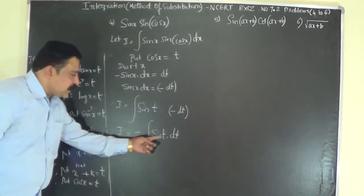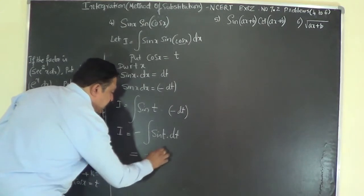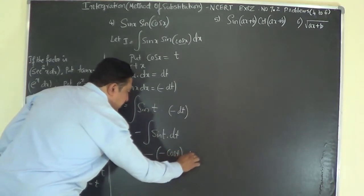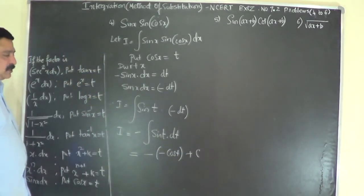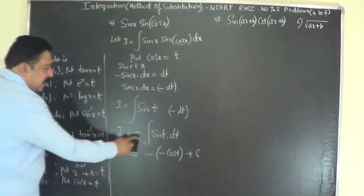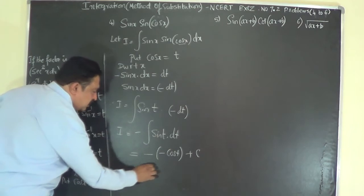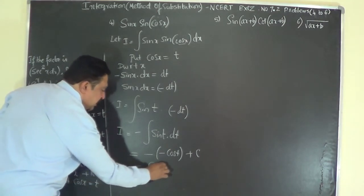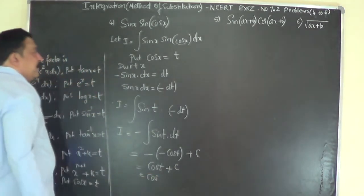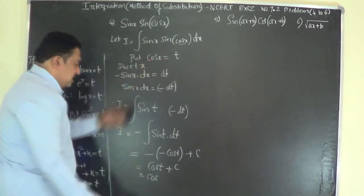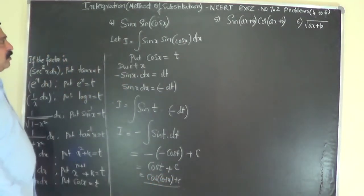The integration of sin(t) dt is minus cos(t), so we get minus of minus cos(t) plus C. The two negatives give a positive, so I equals cos(t) plus C. Substituting back, t equals cos x, so the answer is cos(cos x) plus C.